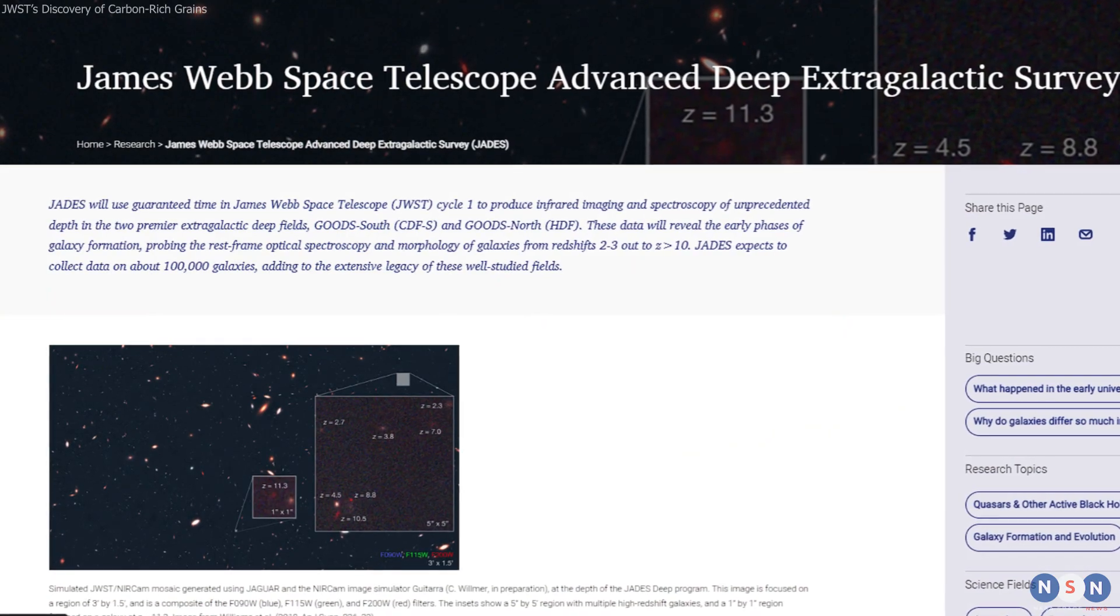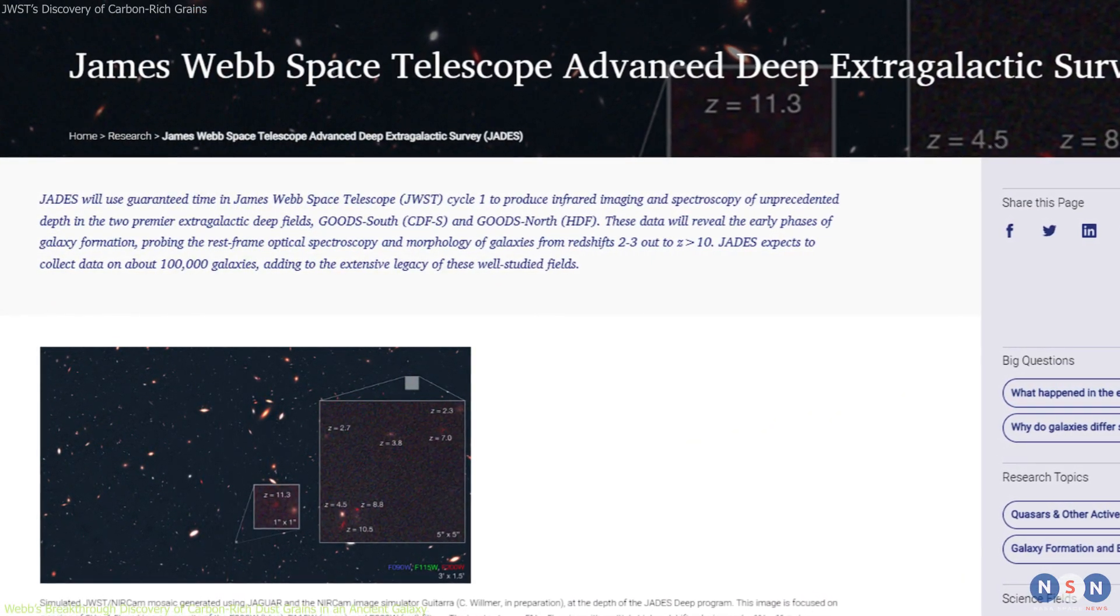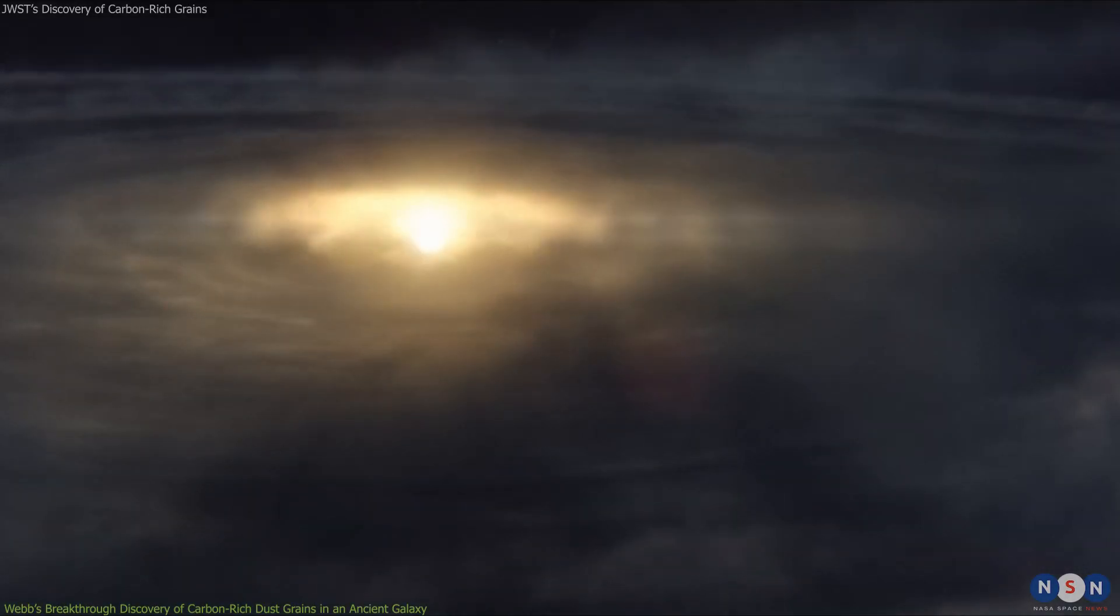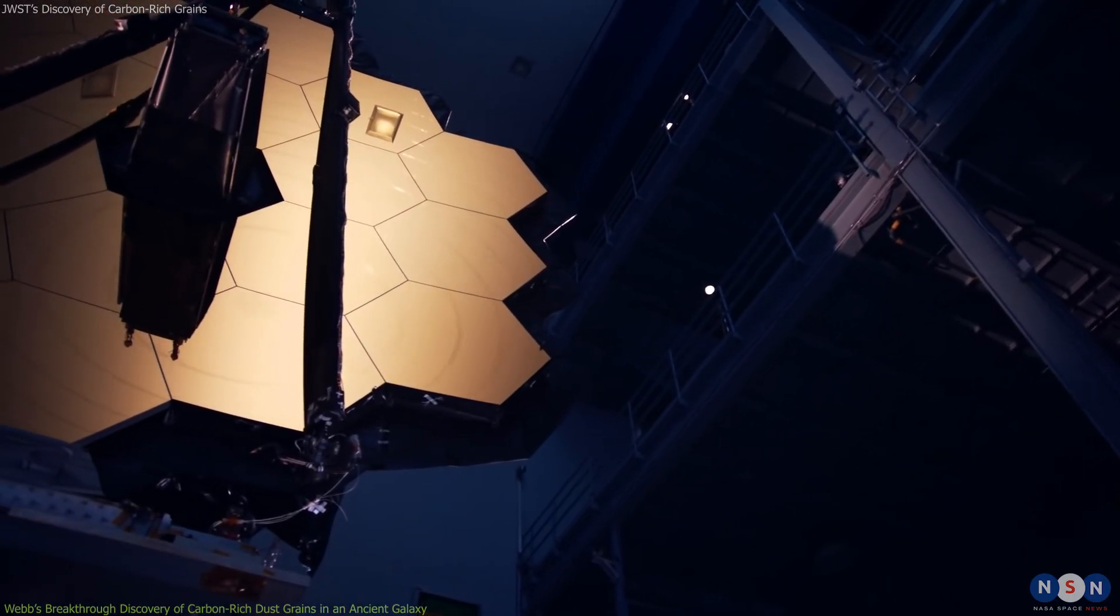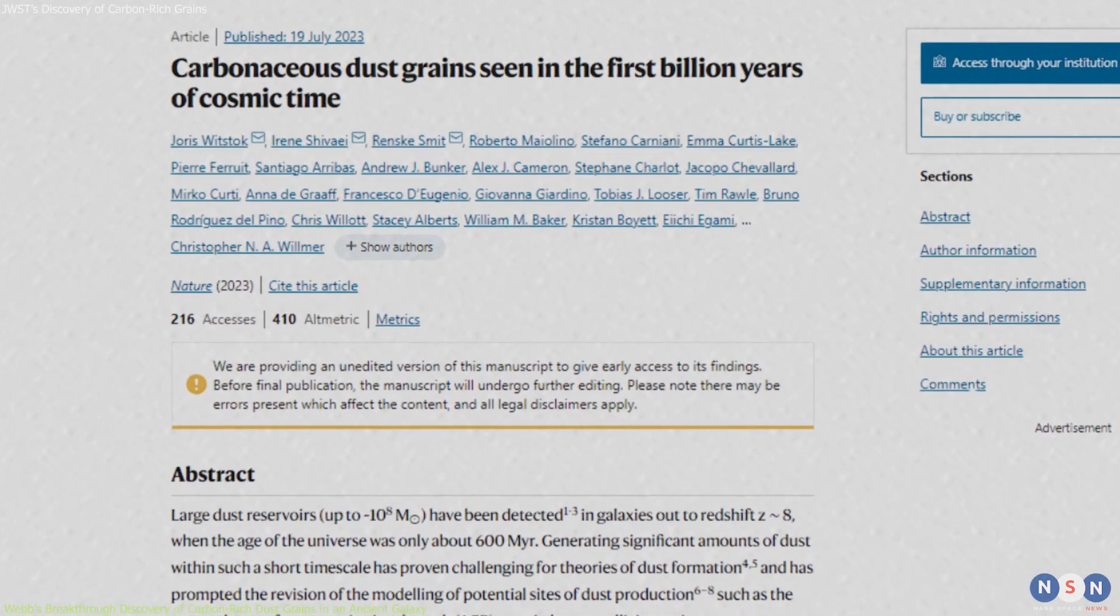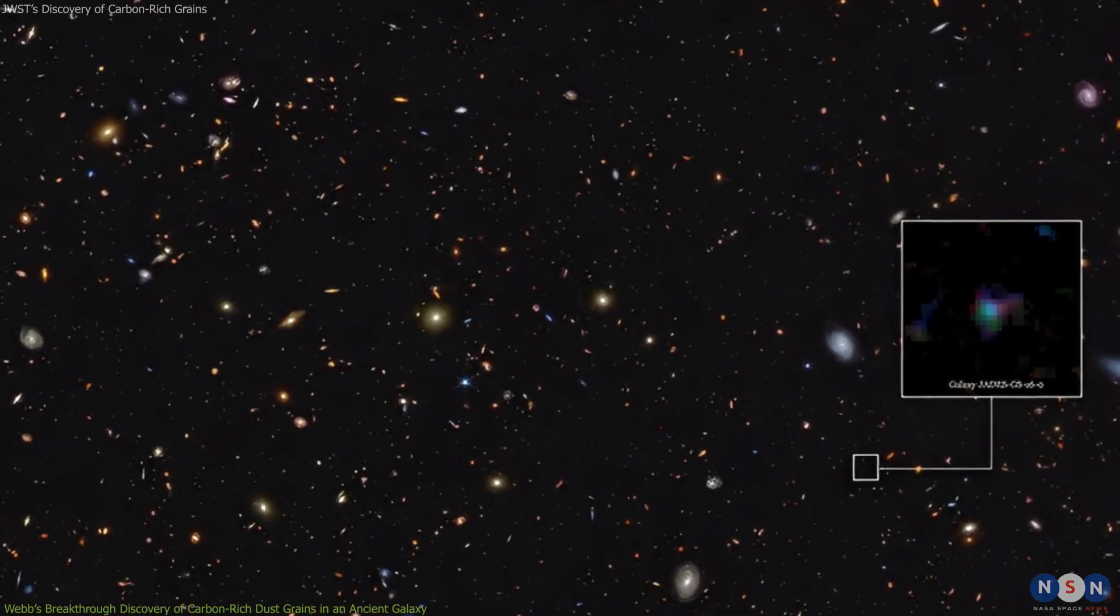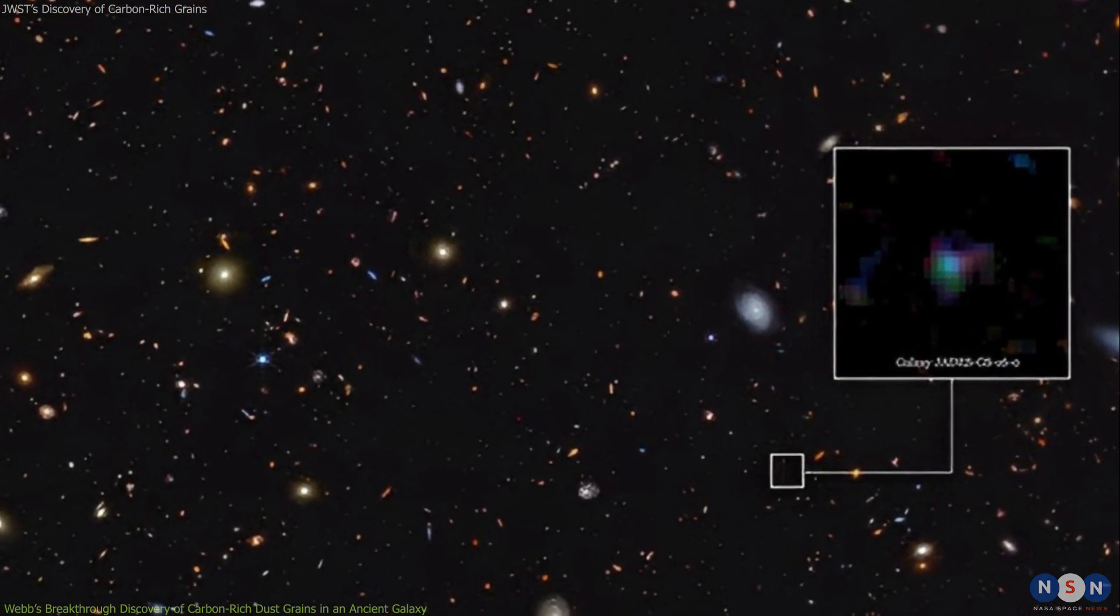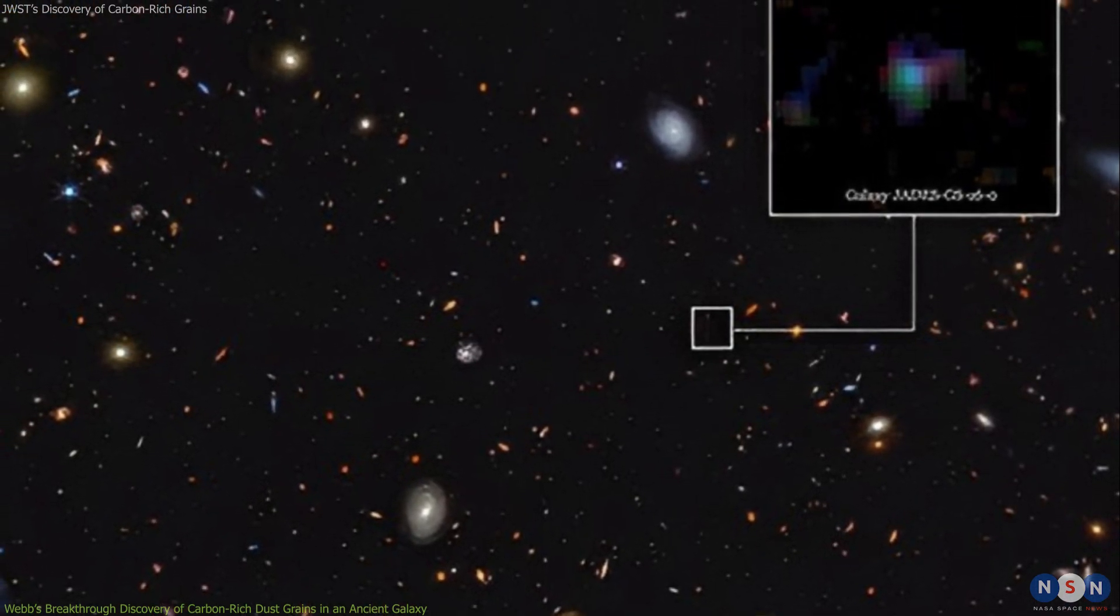Webb is part of a project called JADES, which stands for James Webb Space Telescope Advanced Deep Extragalactic Survey. One of the main goals of JADES is to find and characterize dust grains in the early universe, and that's exactly what Webb has done. In a recent paper published in Nature Astronomy, a team of researchers led by Dr. Ryan Sanders from UC Davis reported the discovery of carbon-rich dust grains in a galaxy that formed when the universe was only 800 million years old. This is one of the oldest galaxies ever observed by Webb and it shows a surprising amount of dust for its age.